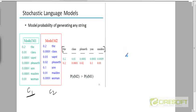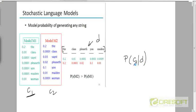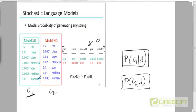Then we compare: what is the probability that this document D came from class C1, and what is the probability it came from class C2? Assuming there are only two classes, we compute which probability is larger, and that is the class to which D belongs.